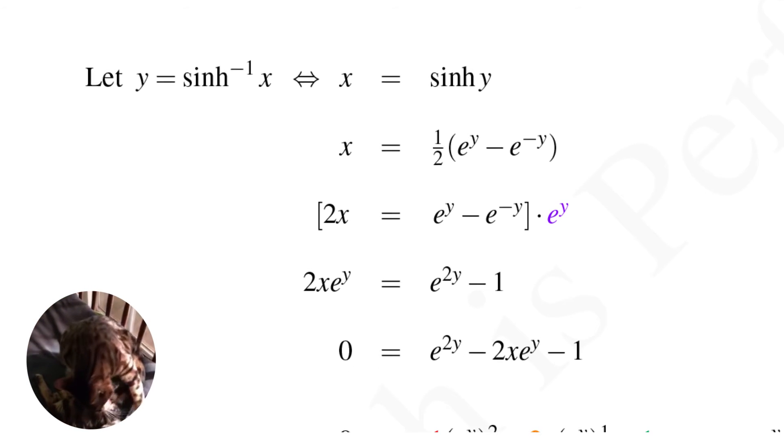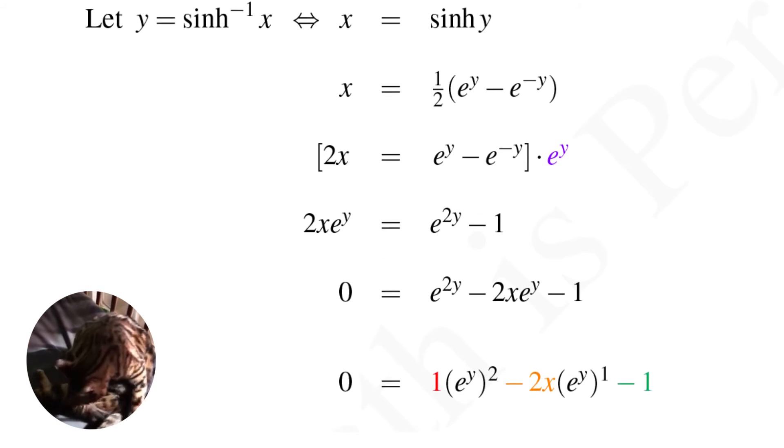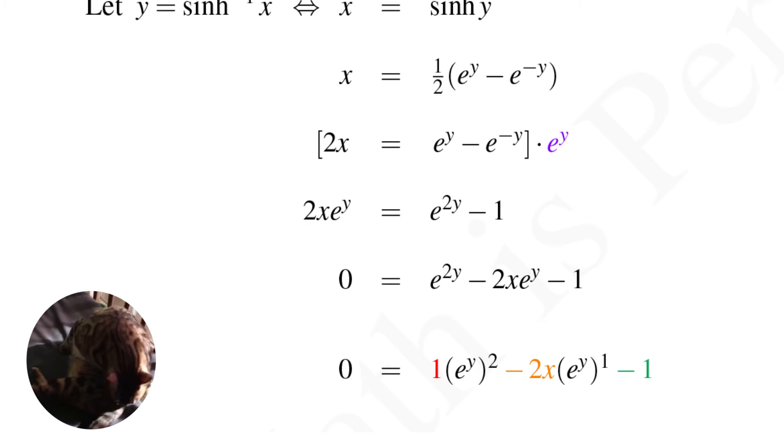So what are my coefficients? We have that 0 equals 1 times the quantity e to the y squared minus twice x the quantity e to the y to the first power minus 1.